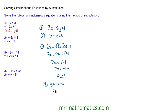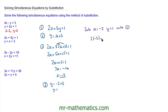So for equation 2, we have y is equal to the x value, which is negative 2 plus 3, which is 1. And again, we can check this by substituting x equals negative 2 and y equals 1 into equation 1. So 2 lots of negative 2 plus 5 lots of y, which is 1. So we know that x is negative 2 and y equals 1.